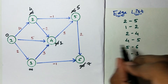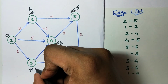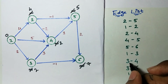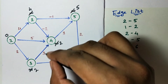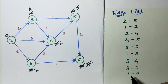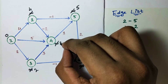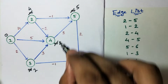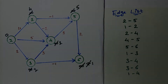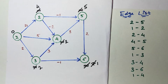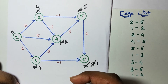Edge 1 to 3: 0 plus 2 is 2, smaller than infinity, change. Edge 3 to 4: 2 plus 3 is 5, which is greater than 2, don't change. Edge 3 to 6: 2 minus 1 is 1, which is smaller than 7, change to 1. Edge 1 to 4: 0 plus 5 is greater than 2, don't change. After the first iteration our graph will look like this.